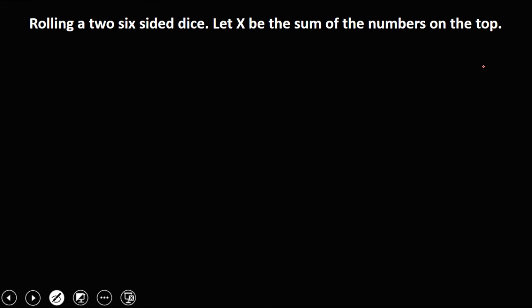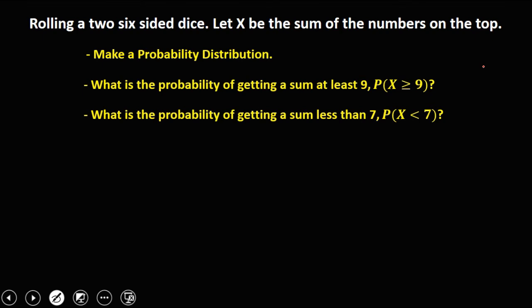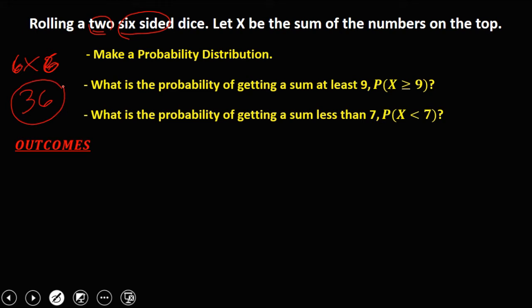For our second example: rolling two six-sided dice. Let X be the sum of the numbers on top. Then make a probability distribution. We also need to find the probability of getting a sum of at least nine, and the probability of getting a sum less than seven. Since we have two six-sided dice, the total number of outcomes is 6 × 6 = 36.